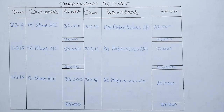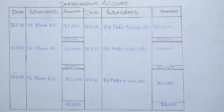Now we are preparing the depreciation account with columns: date, particulars, and amount. First year depreciation of plant for 9 months is Rs 37,500, so to plant account Rs 37,500. Remember, here we will not close this account with balance carried down, as depreciation falls under the profit and loss account, so we will close this account with profit and loss account.